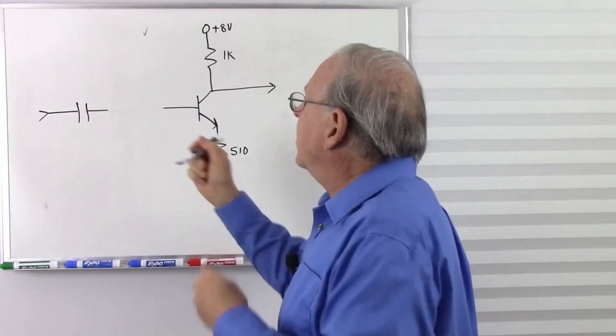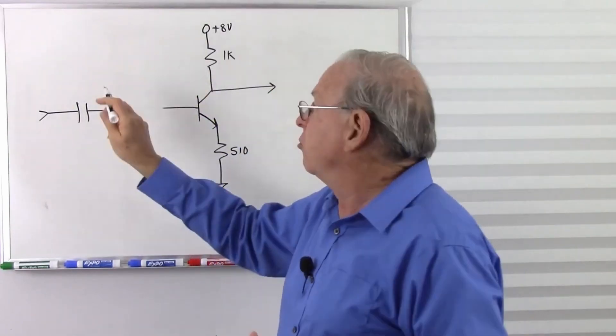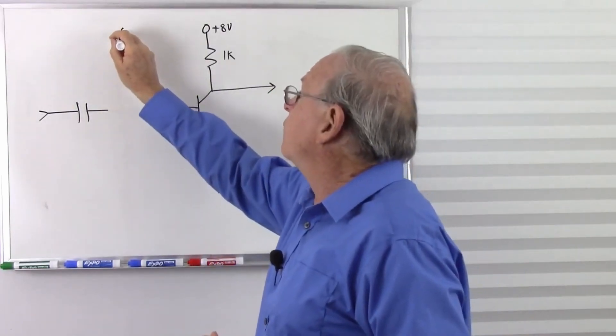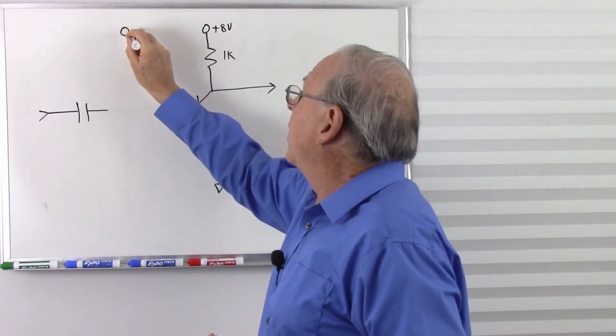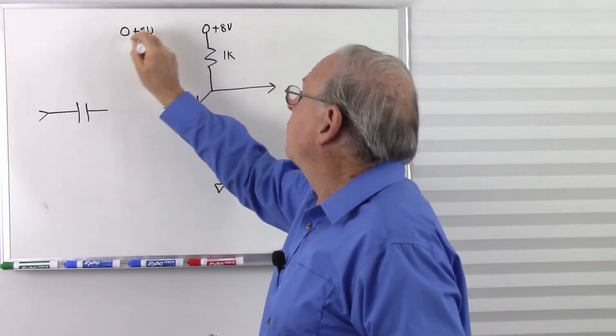But I'm not going to have it in the circuit because it'll be too cluttered, but we don't need it for determining the DC bias anyway. So there's our 8 volts.